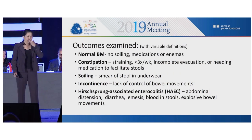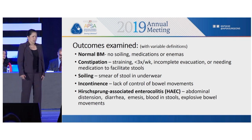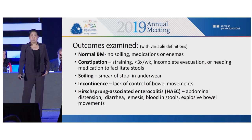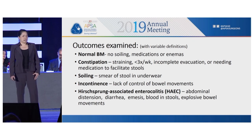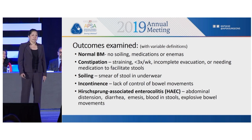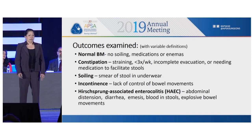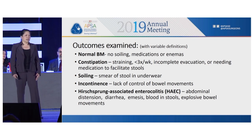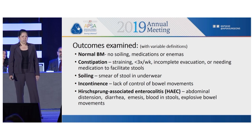The outcomes examined had variable definitions within the literature. Normal bowel movements were defined as no soiling and not requiring medications or enemas. Constipation was defined as straining, bowel movements less than three times per week, incomplete evacuation of stools, or needing medications to facilitate stools. Soiling and incontinence were commonly grouped together. Hirschsprung's-associated enterocolitis definitions varied, but generally abdominal distention, diarrhea, emesis, blood in the stool, or explosive bowel movements were defined as enterocolitis.